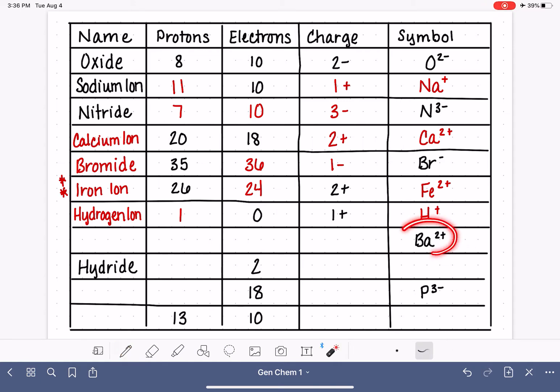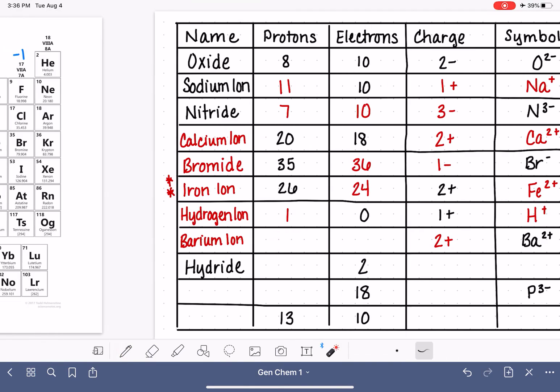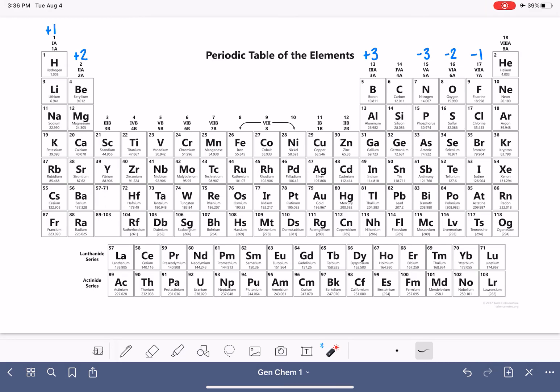Here's our next example. All that we have is the symbol BA2 plus. This tells us we have a plus 2 charge. BA is the symbol for barium. So this is the barium ion. In order to figure out how many protons there are, we need to go find barium on the periodic table. Barium is right here.